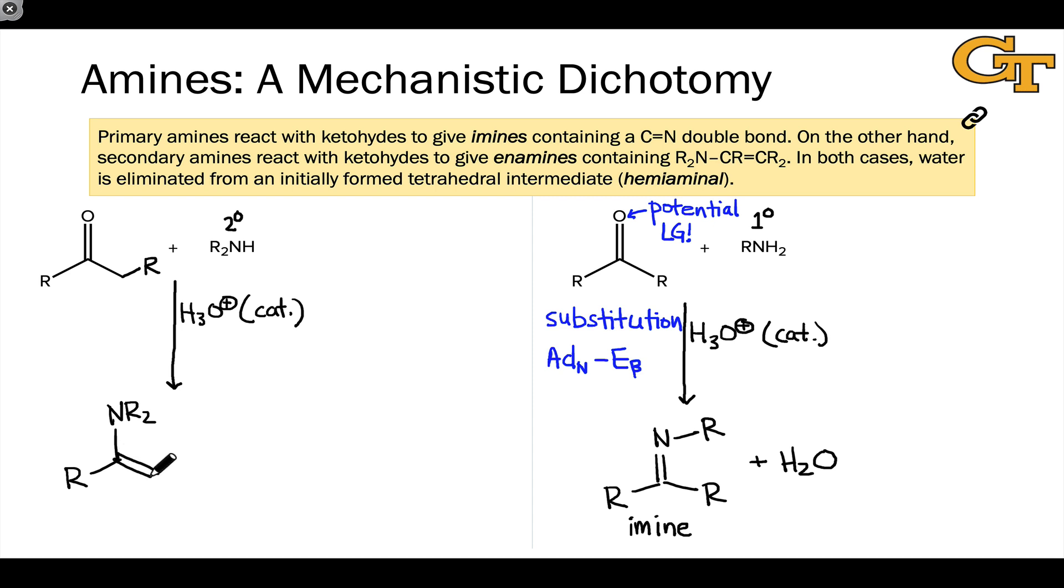However, rather than ending up with a carbon nitrogen double bond, which would be impossible in this case because of the two R groups without introducing positive charge on the nitrogen, we end up with a carbon-carbon double bond. This compound is referred to as an enamine. It's called an enamine because it contains an alkene carbon-carbon double bond linked to an amino group, the NR2 group. The byproduct of this reaction is again water.